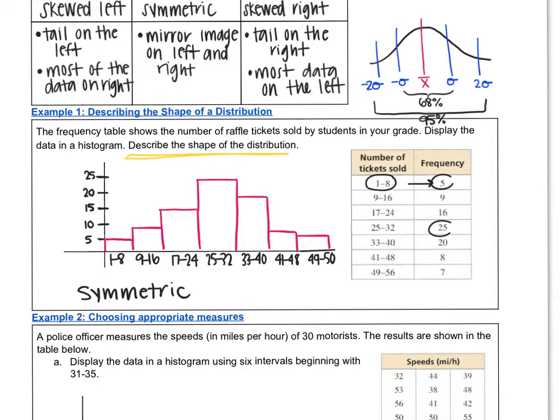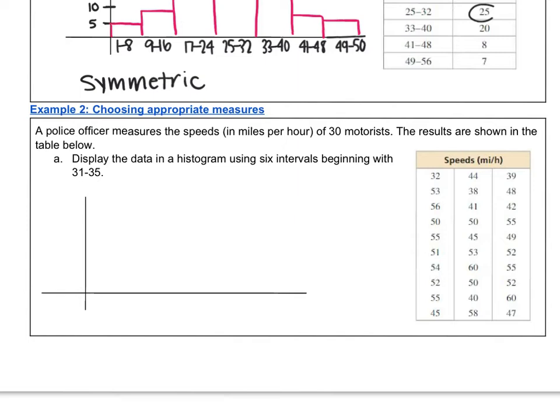In example two, we're actually going to be asked to make a histogram as well. Except now, we're not given a frequency table. We're just given the speeds. So we're going to have to make a frequency table with our intervals and our frequencies, and then make it into a histogram. A police officer measures the speeds in miles per hour of 30 motorists. Display the data in a histogram using six intervals beginning with 31 to 35.